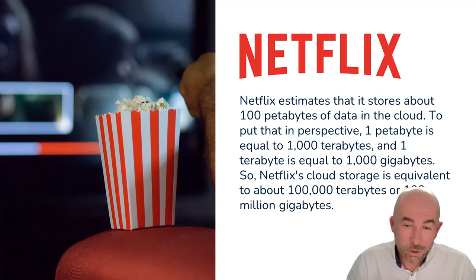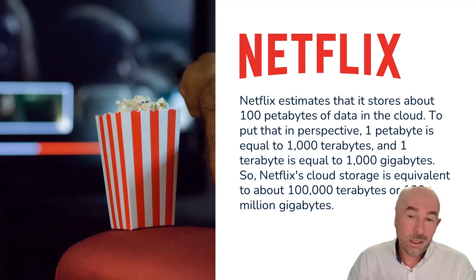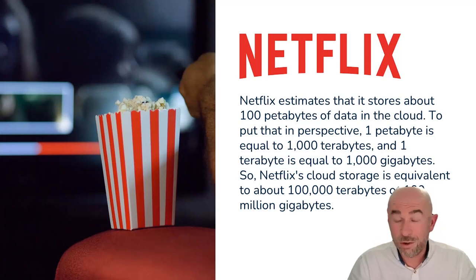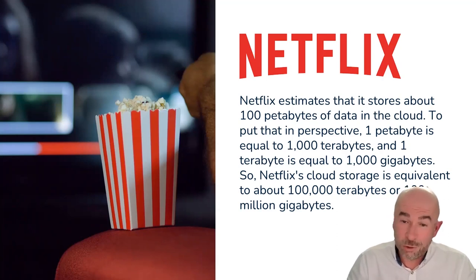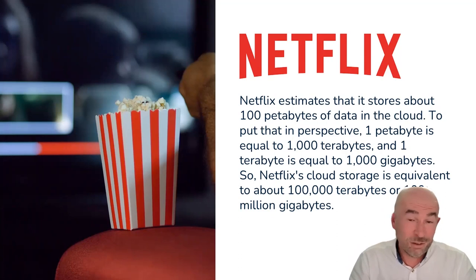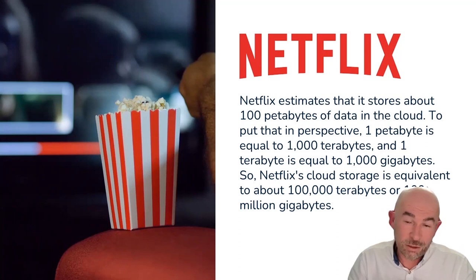The resilience of the cloud — having many instances of the same compute and storage capability — gives companies like Netflix the ability to have no downtime. I honestly can't remember the last time Netflix couldn't stream films to me. If you want to know how Netflix does that, search for 'Chaos Monkey' — Netflix actually runs an application that crashes servers randomly across their production network. They run this in production to ensure their resilience is strong enough to cope with any outages.